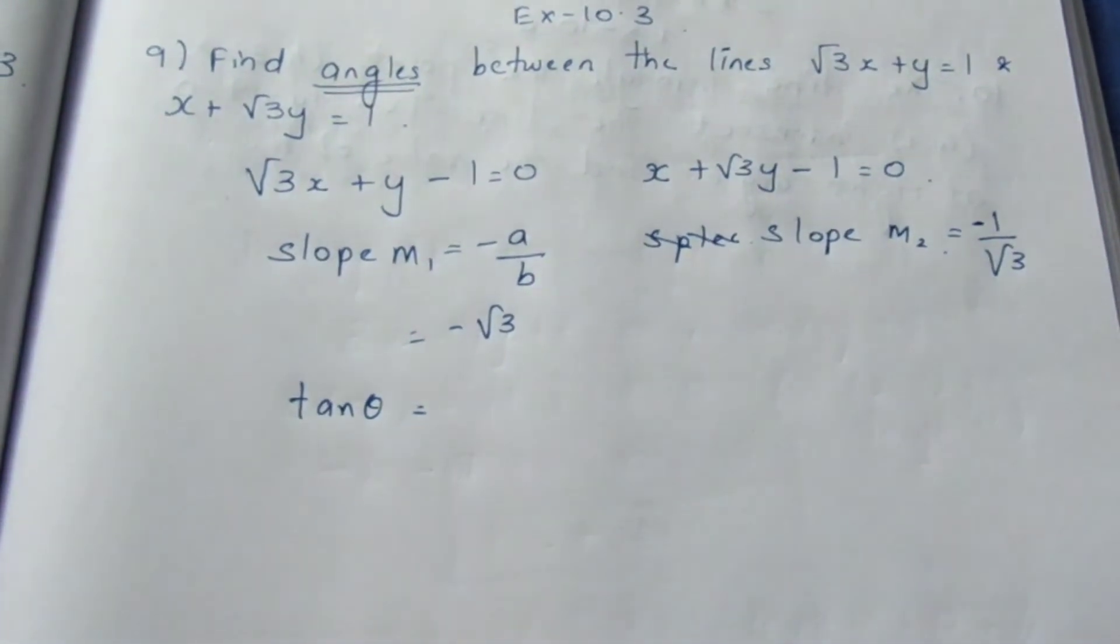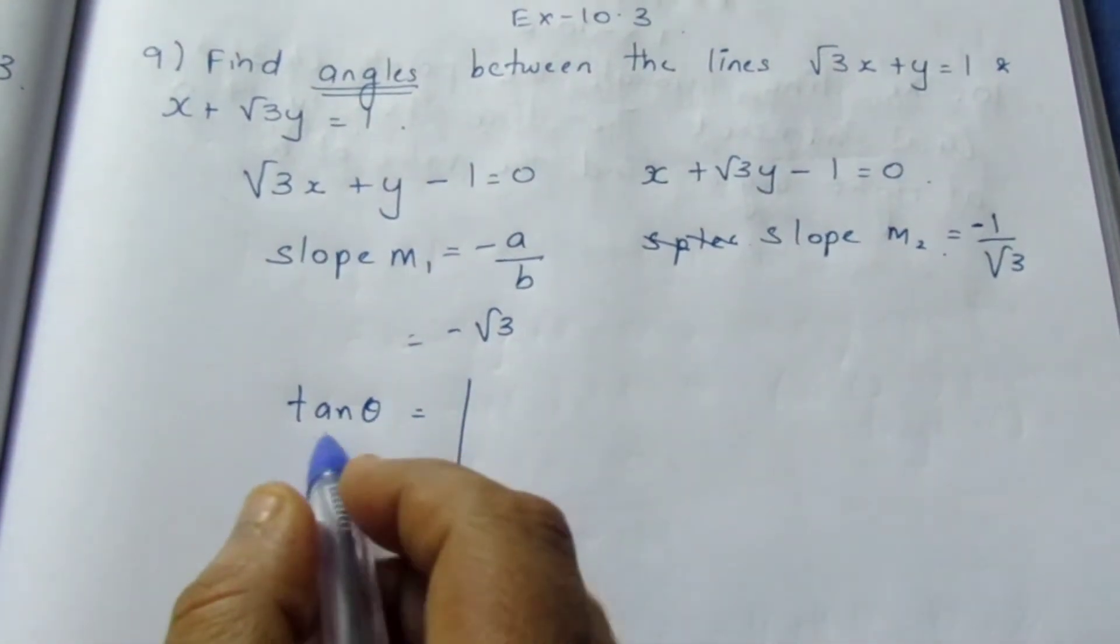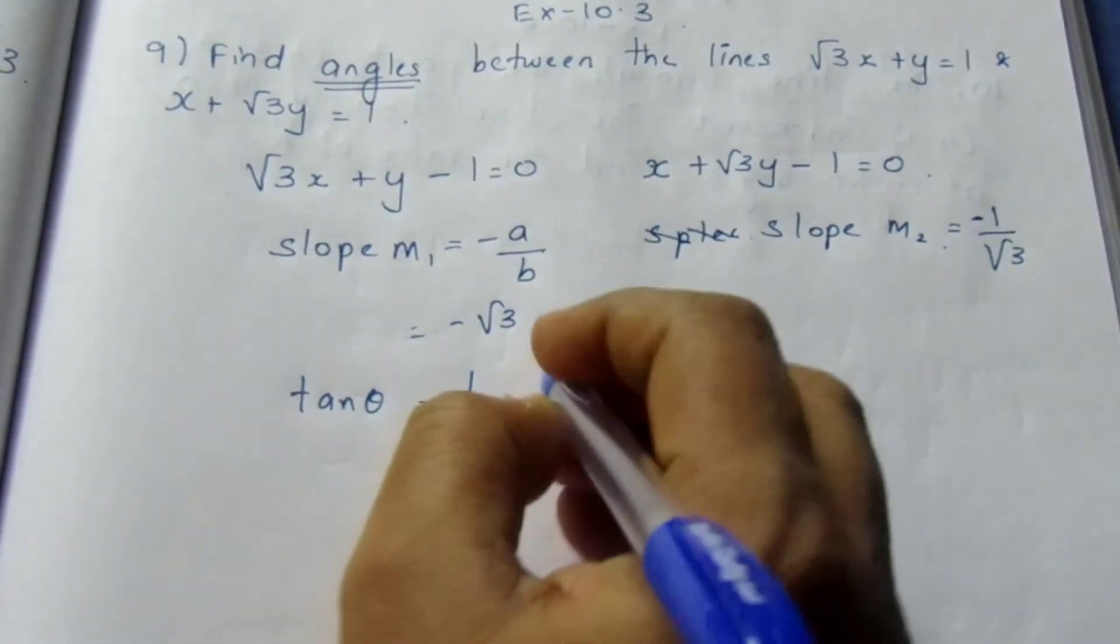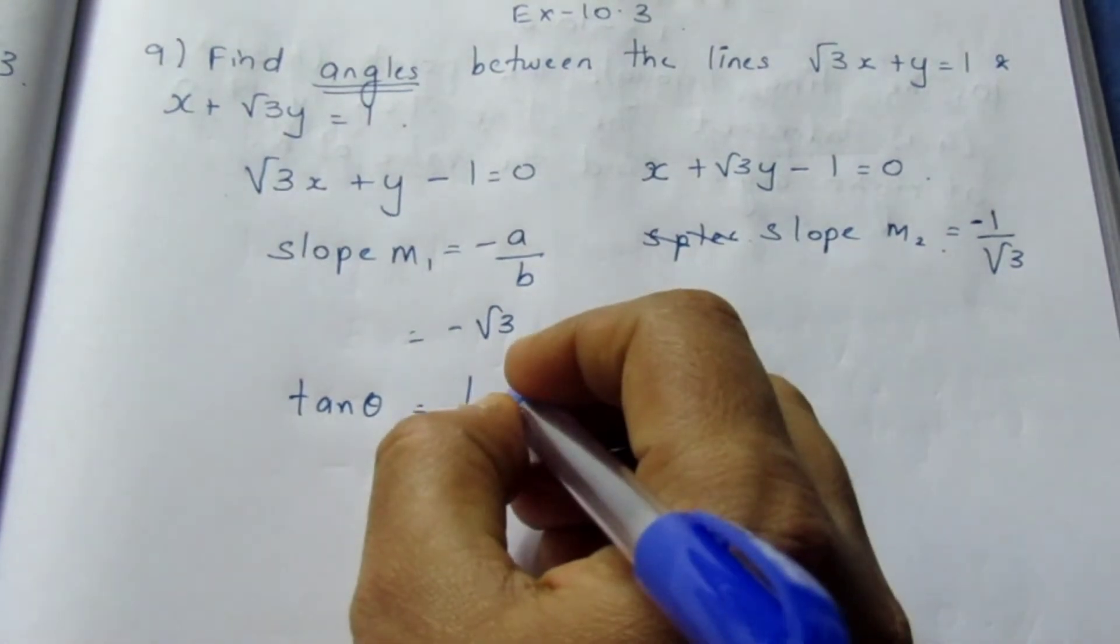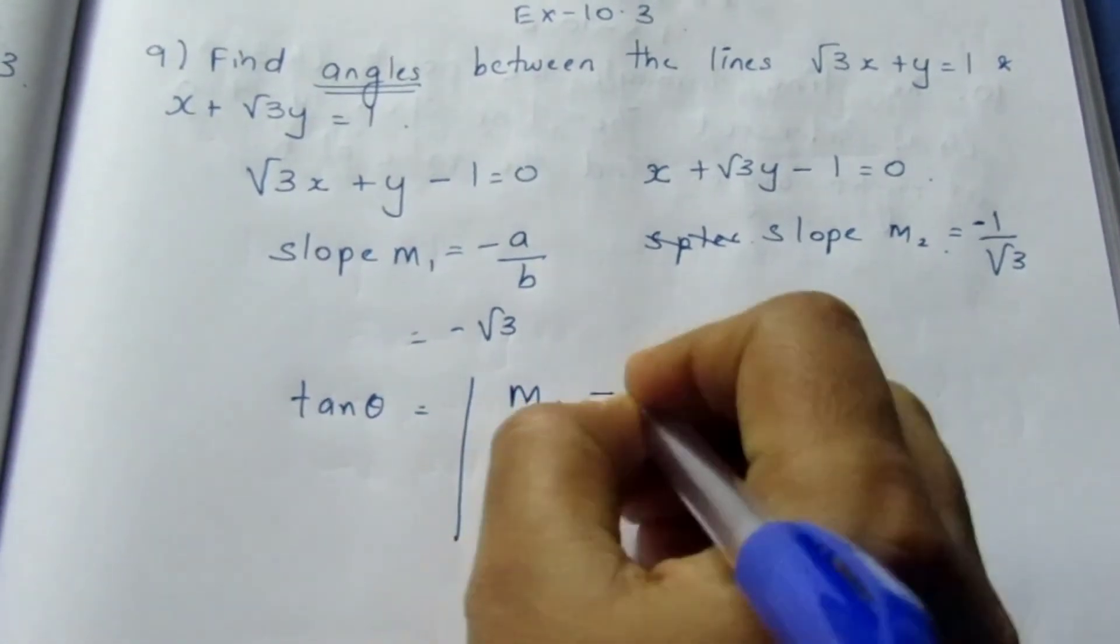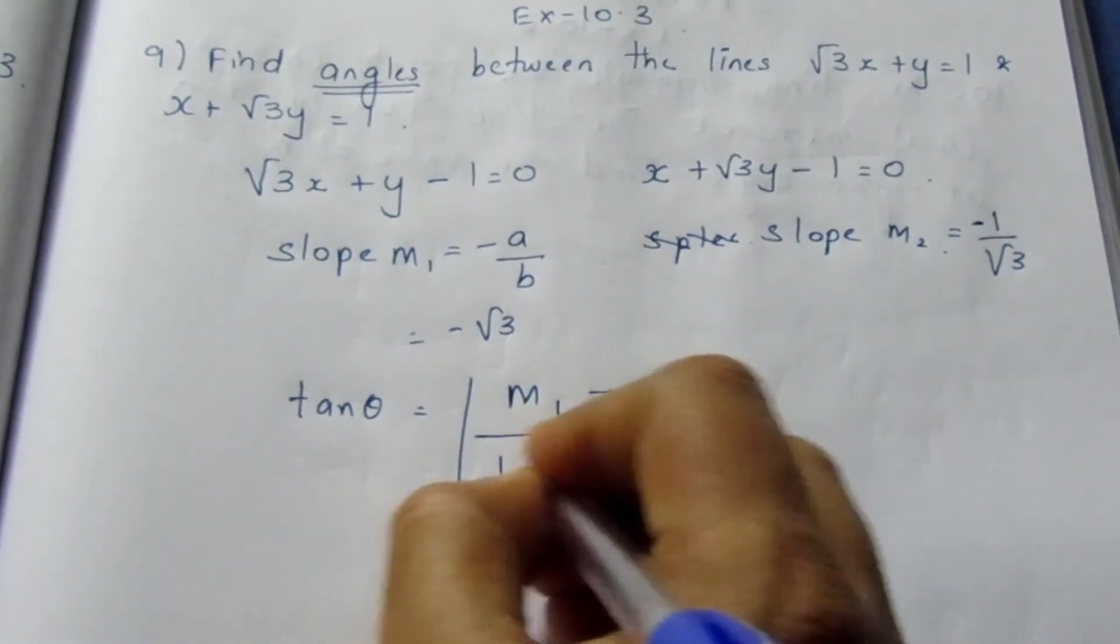For that we have a formula to find the value of θ, that is tan θ = (m1 - m2)/(1 + m1·m2).